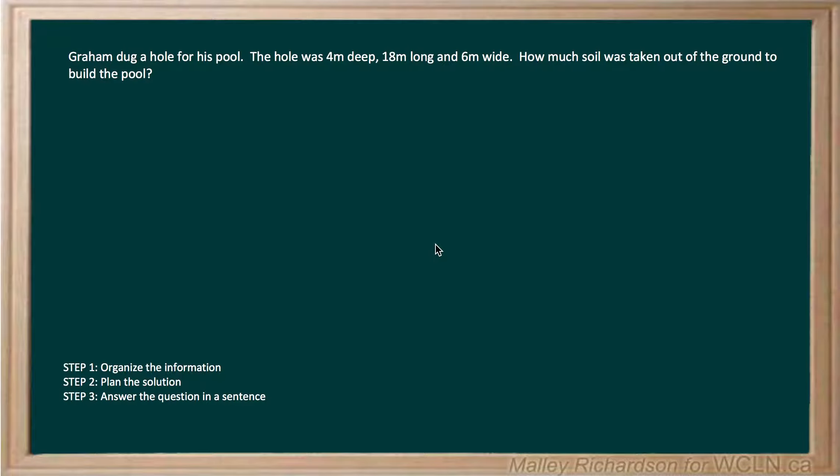Graham dug a hole for his pool. The hole was 4 meters deep, 18 meters long, and 6 meters wide. How much soil was taken out of the ground to build the pool?